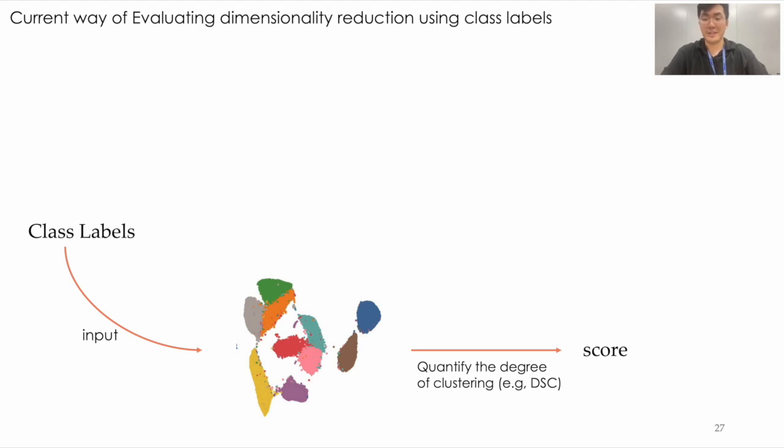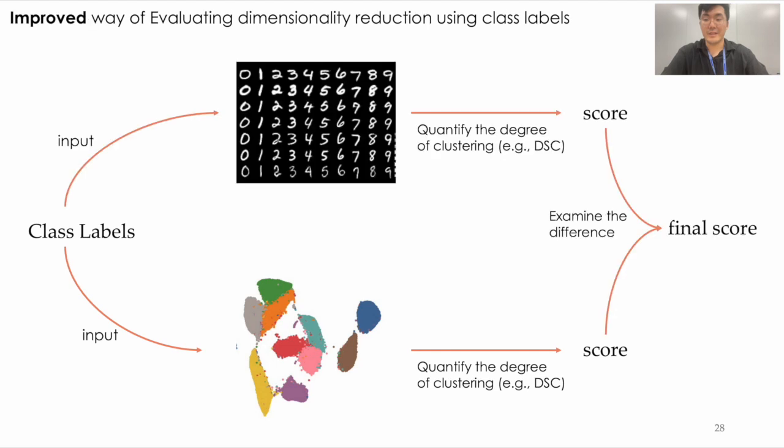Skipping over mathematical details, our method's core concept is straightforward. Let's first look at the current way of evaluating dimensionality reduction using class labels. This is done by simply examining the degree of clustering in the embedded space. In our improved metrics, we do such an examination not only in low-dimensional embedding but also in high-dimensional space. Then, we quantify the difference between the way of clustering in two spaces yielding finer distortion scores. So, it is simple. We check the degree of clustering in both the original and embedded spaces and compare them.